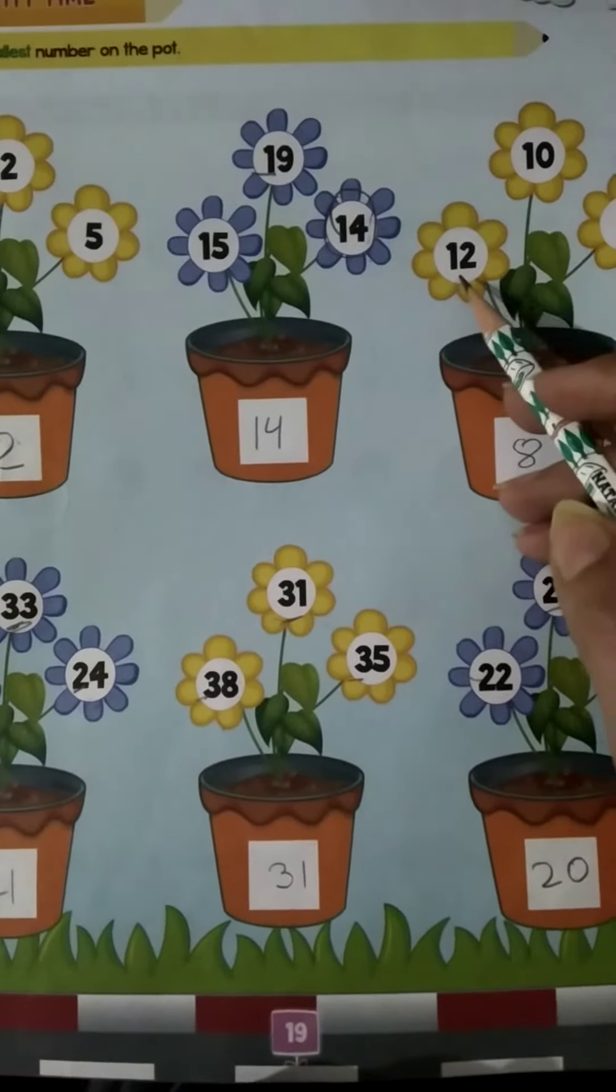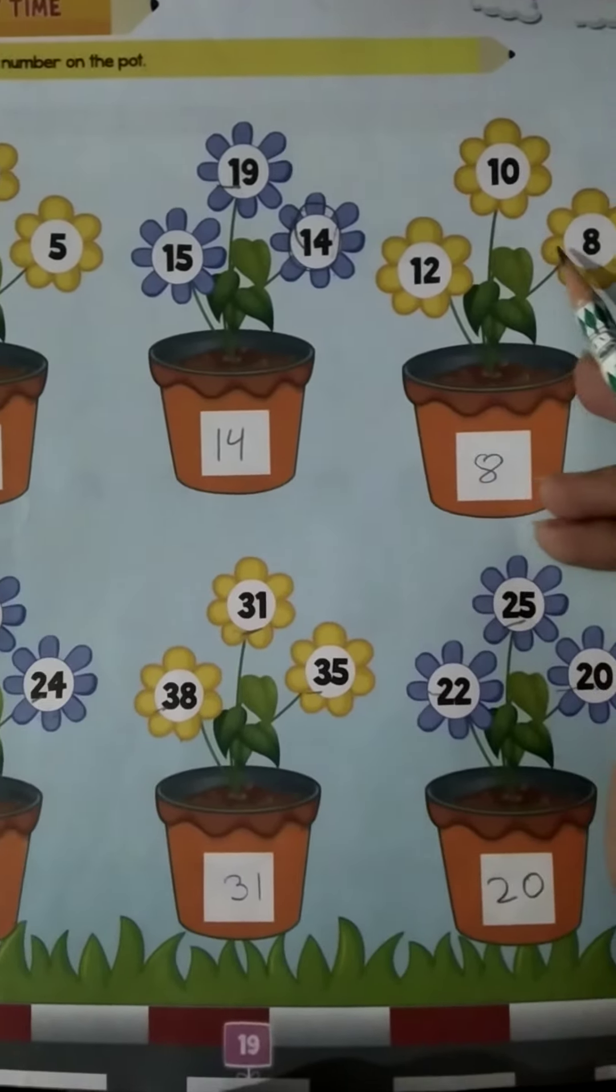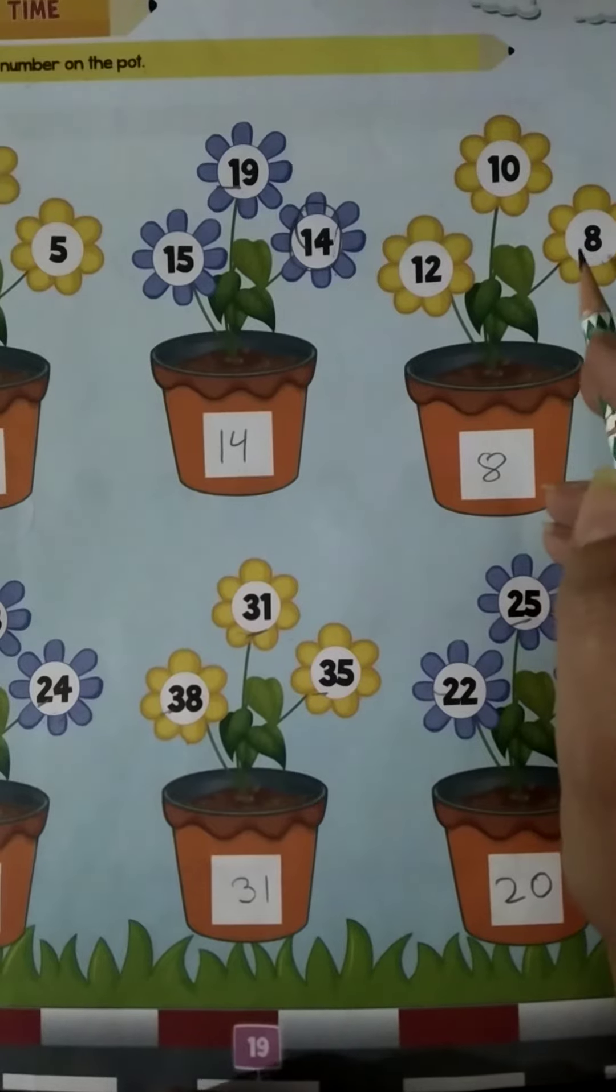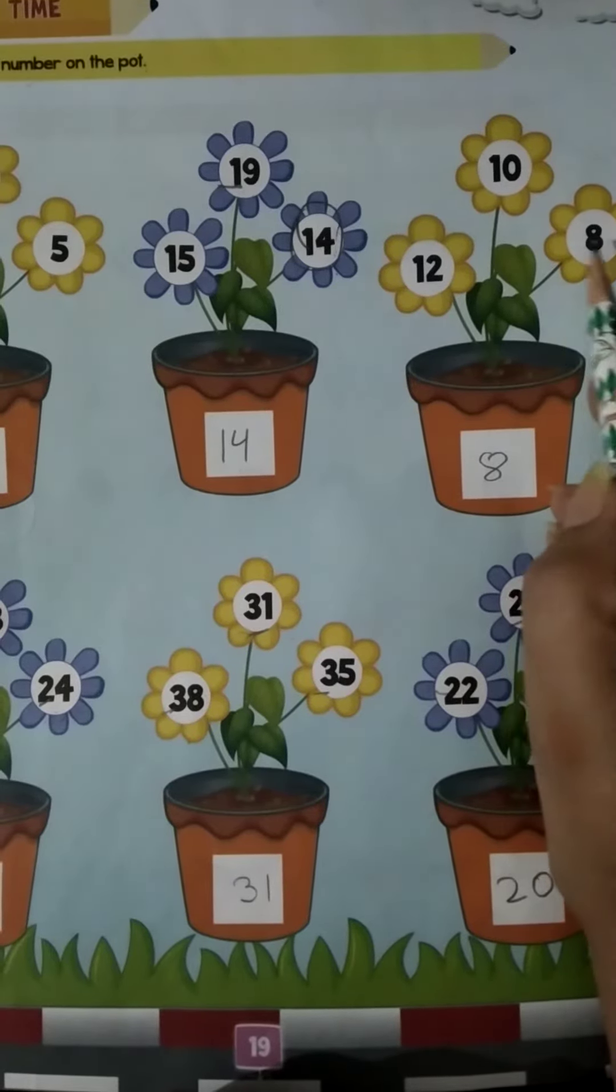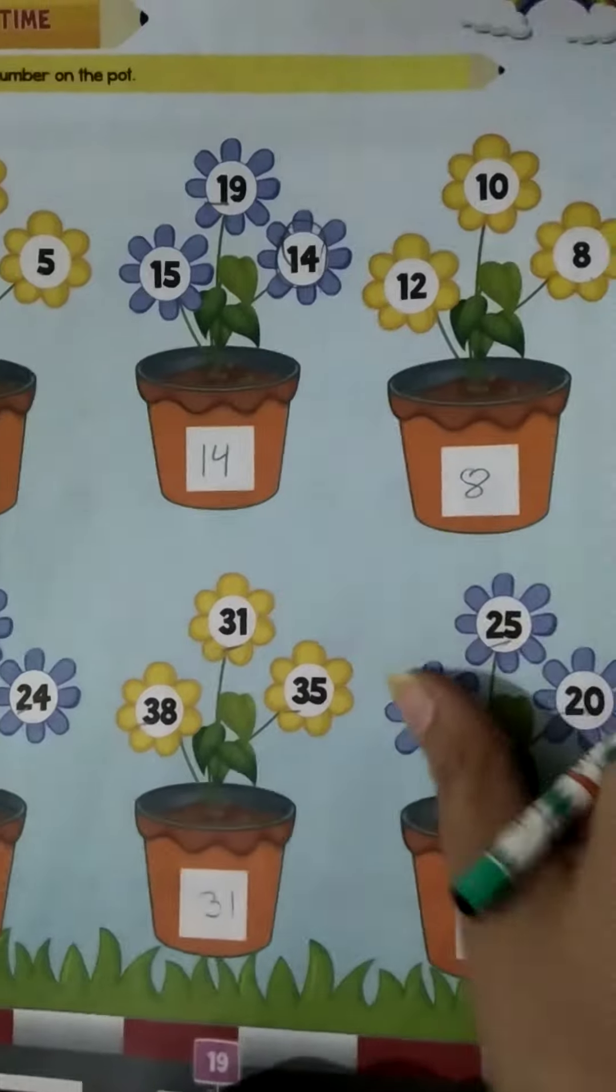On the next pot, we have 12, 10 and 8. Dhekho pahle 8 aata hai, phir 9, phir 10, phir 11, 12. Toh sabse small kounsa hua? 8.